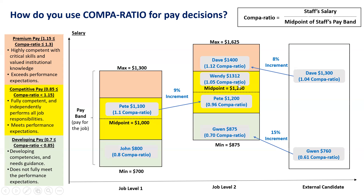At job level two, Pete's experience is less than Wendy's, so Pete's salary should be lower than Wendy's salary. Also, when we promote Pete, his compa-ratio at the higher job level two should be lower than his compa-ratio at job level one. Initially at job level one his compa-ratio was 1.1. At job level two, with the new salary of $1,200 divided by the midpoint of $1,250, his compa-ratio becomes 0.96. When you promote a person, their compa-ratio should drop, because once promoted, Pete will need guidance as he learns and develops competencies for the higher job level.